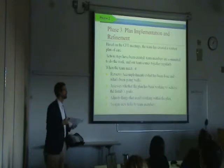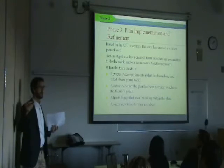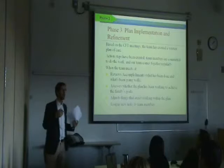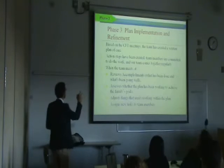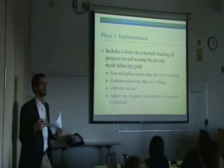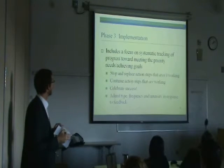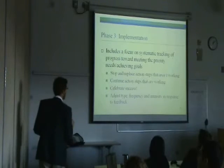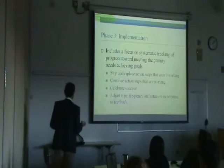In plan implementation, based on those child and family team meetings, the team has a written plan of care. This is a bit different from models like family group decision making — wraparound is an intensive process that takes place over time with ongoing implementation support. Action steps are created, team members are committed to do the work, and the team comes together regularly. We're talking about a facilitation process where you're systematically tracking progress towards meeting priority needs and achieving the goals in the plan, stopping and replacing action steps that aren't working. The orientation is not that people fail, but plans fail. Continue the action steps that are working and celebrate success.